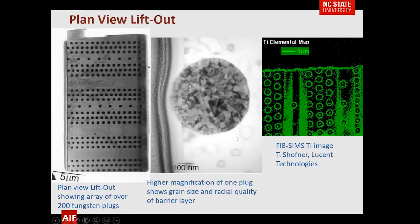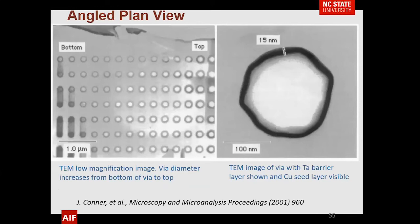If you angle that plan view, you can look at an array of vias and see the actual shape going from the bottom to the top. By doing an angled plan view, you get a tremendous amount of information over repeating features. Here's an example of just one: in these semiconductor depositions you don't always get a perfect circular feature — something you could not determine with just a single cross-section.